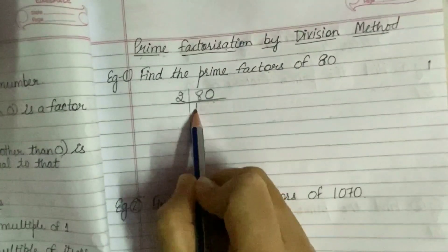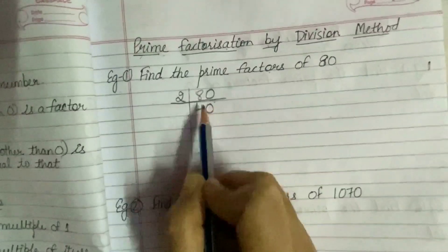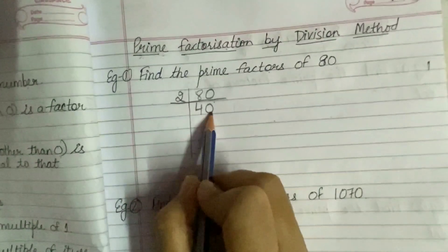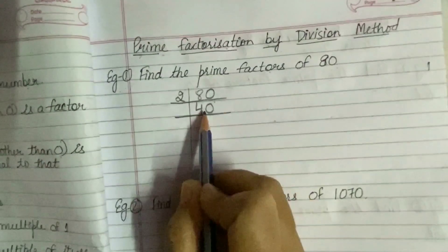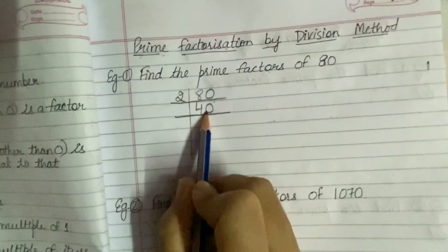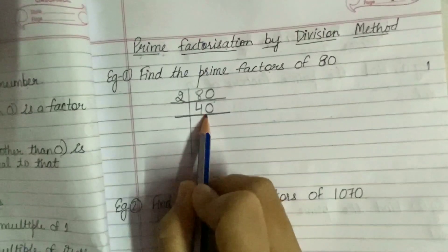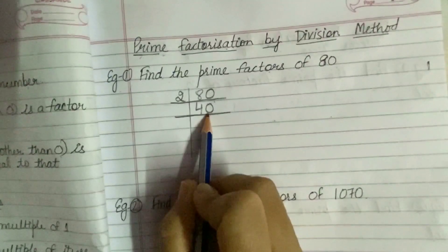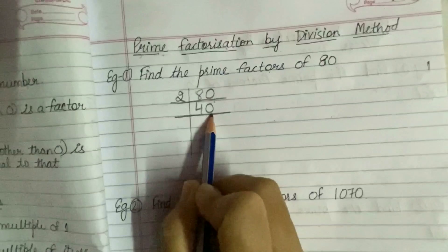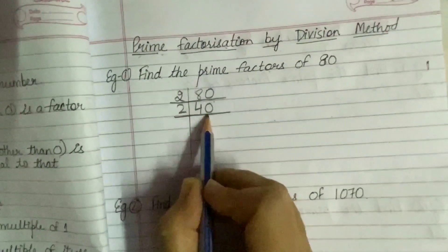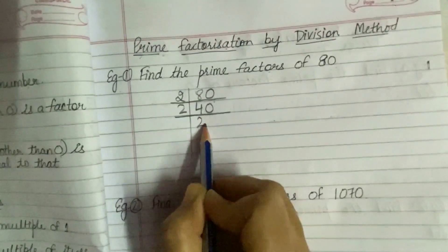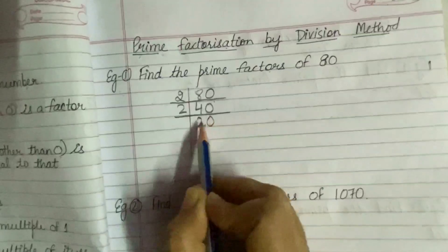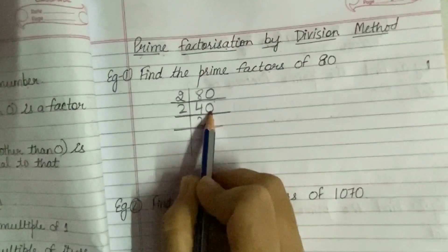2 times 40 equals 80. Again, see this 40. The digit at the 1's place is 0, so 40 is again divisible by 2. We write 2 here, and the quotient is 20, because 2 times 20 equals 40. Again, 0 is at the 1's place, meaning 20 is divisible by 2. We write 2 and the quotient is 10, because 2 times 10 equals 20.